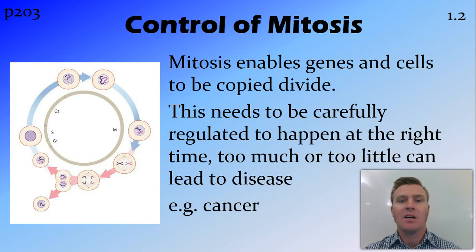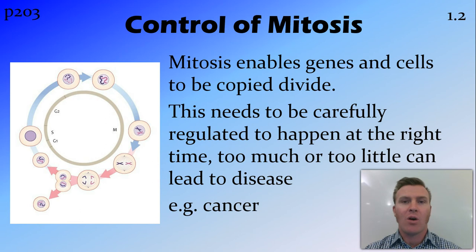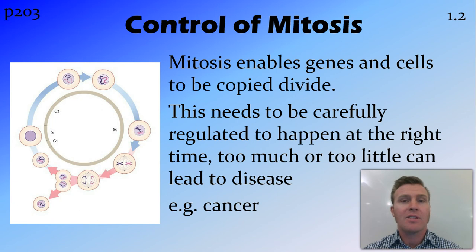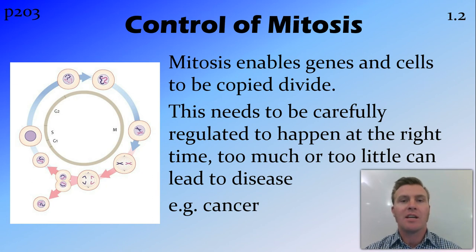Mitosis is how cells divide and how those genes are copied. Mitosis needs to be controlled so that it's happening at the right time and the right speed. Too much or too little of this cell division can lead to diseases. For example, cancer is the name we give to pretty much any disease where mitosis is happening too fast — too many cells are being made, that cell growth gets out of control, and we call this set of diseases cancer.